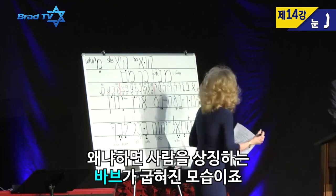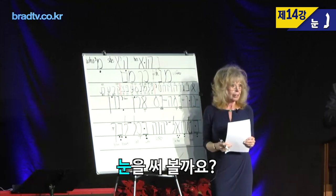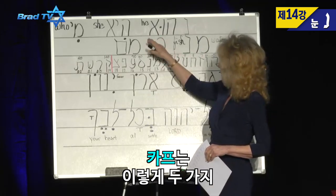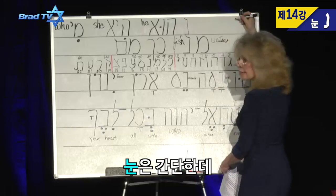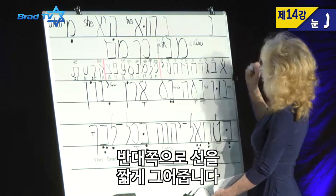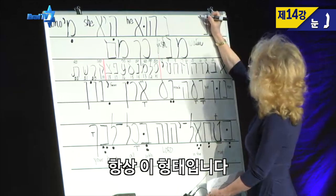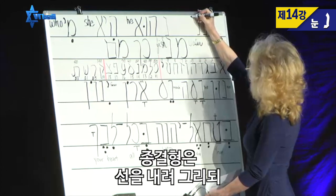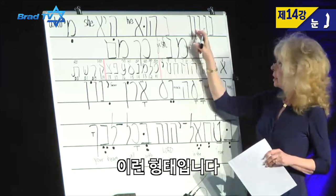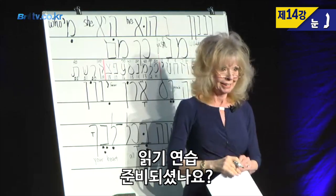Noon also represents humility because it's like a broken Vav, and a Vav represents a man. Now let's write the Noon. Like Kaf and Mem, Noon has two forms. To write it, you just take a little horizontal line, a short one, come down, and then another short horizontal line going out — that's the Noon anywhere in the word except the very last letter. The final Noon: your short line comes down below the line, and if that Noon is the very last letter in a word, this little part just straightens out and goes down.